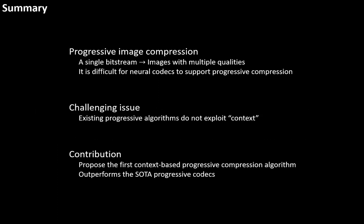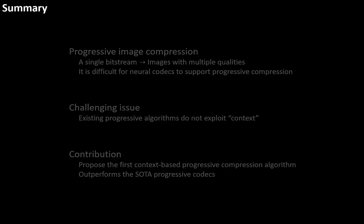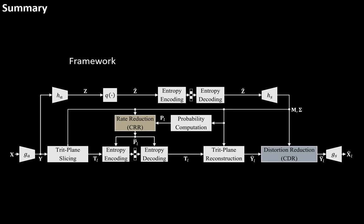Progressive image compression is to encode an input image into a single bitstream, consists of several chunks, and to decode reconstructed images with multiple qualities. It is the framework of CTC network.